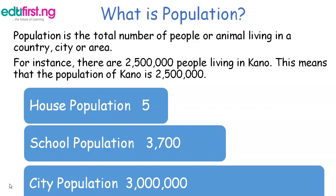In your school, the total number of students is three thousand five hundred. The number of staff is two hundred, making three thousand seven hundred the total number of students and teachers combined.